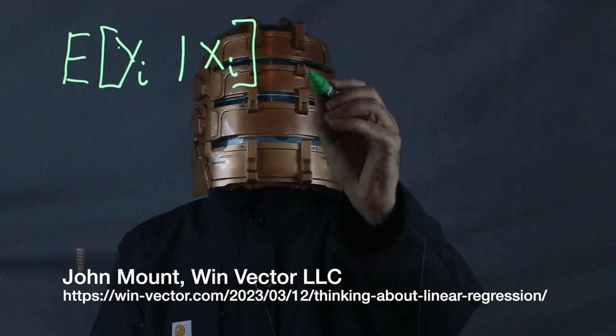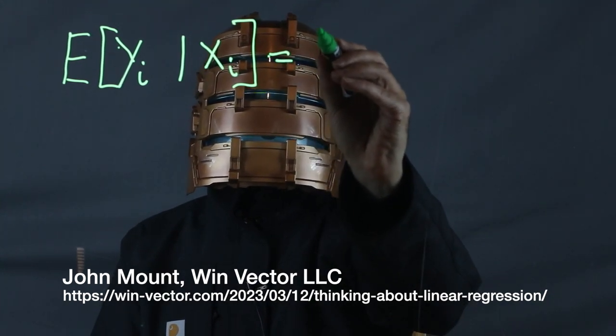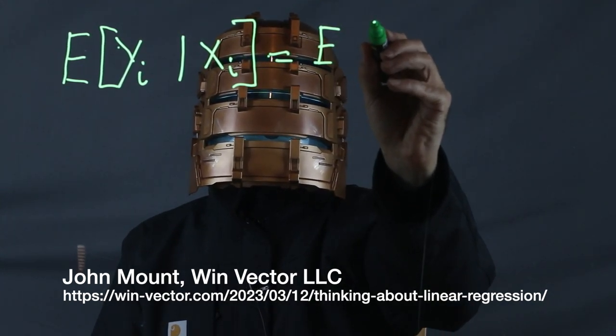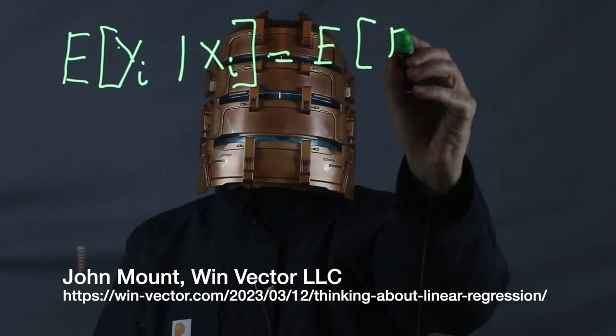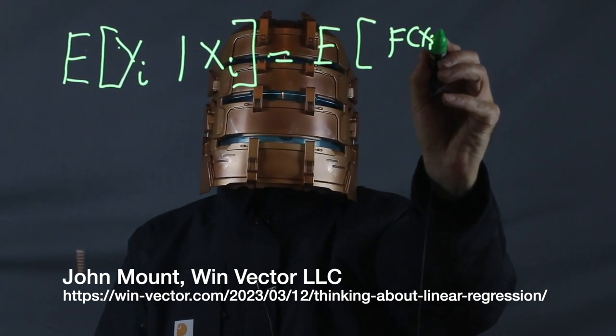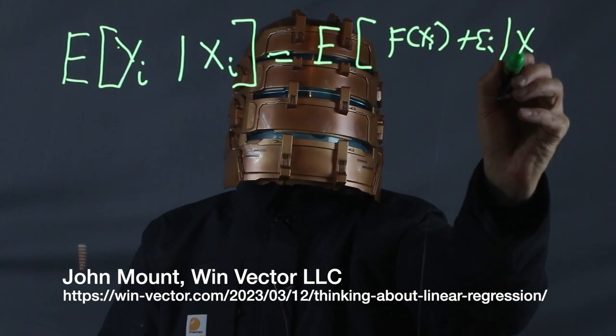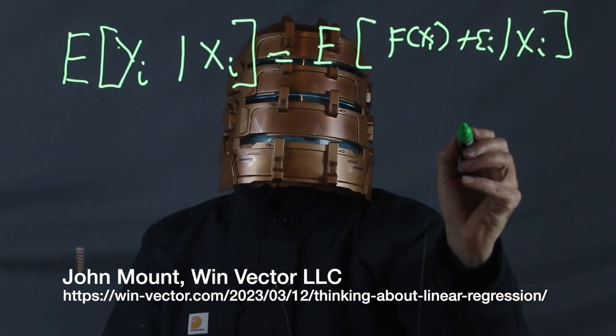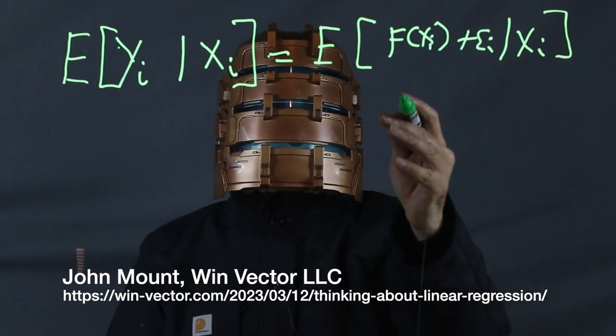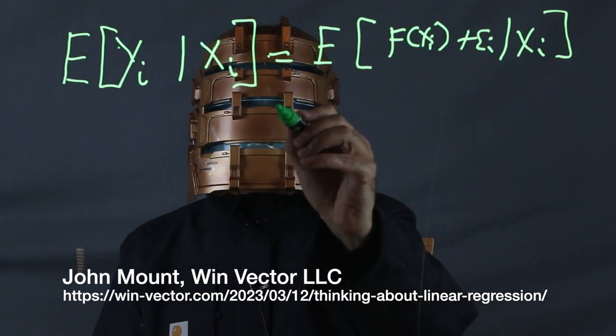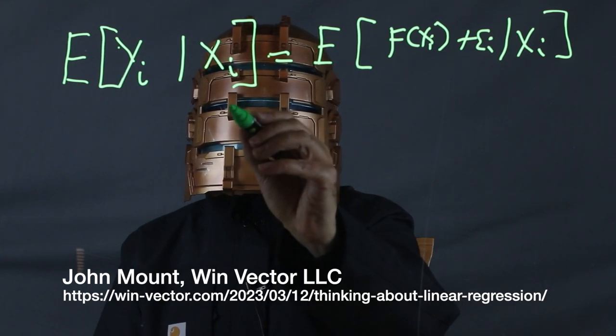Using our formulation, this equals, just by substitution, f some function of x_i plus an error term. Now, one of the beautiful things about expected values is they're linear. So this itself equals the sum.